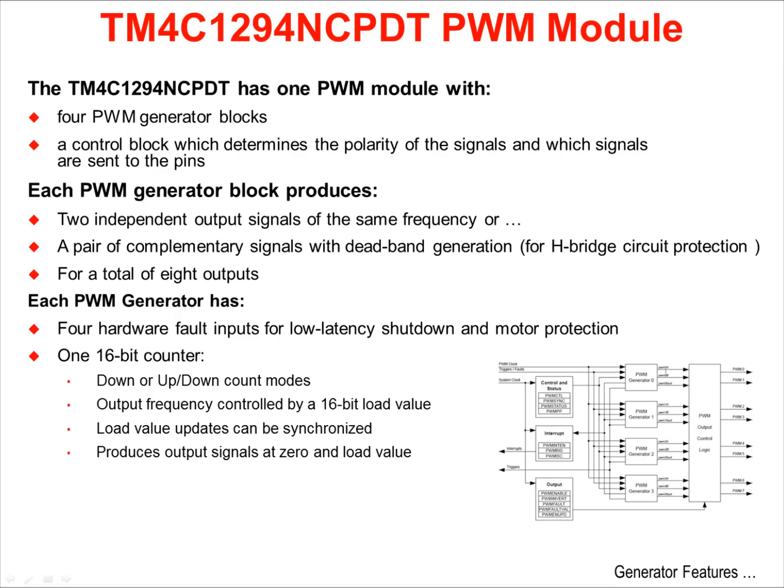Four generators with two output signals each is a total of eight outputs, or four complementary pairs. Each PWM generator also has four hardware fault inputs for load latency shutdown and protection of the motor that's under control.